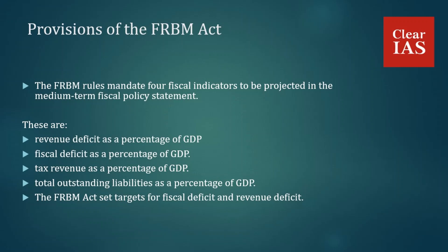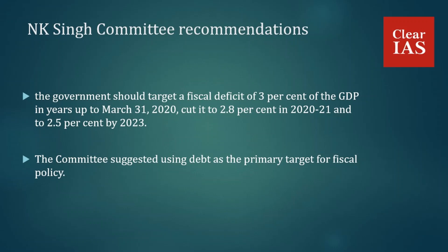A committee was constituted by the government in 2016 to review the FRBM Act, called the NK Singh Committee. The reason this committee was constituted was that the government believed the FRBM targets were too rigid. So in May 2016, the government constituted the NK Singh Committee to review the FRBM Act.